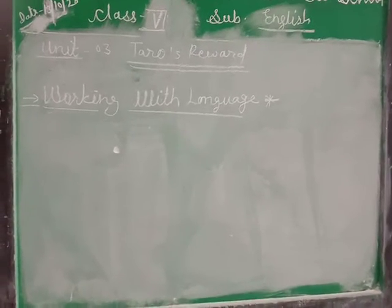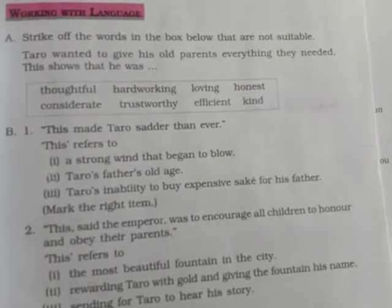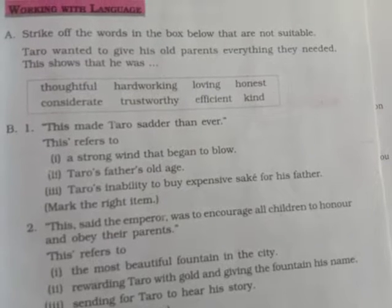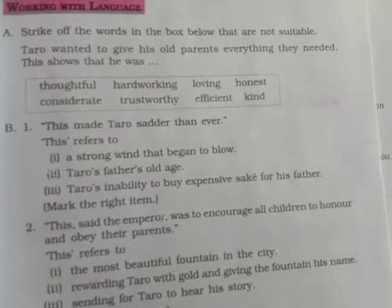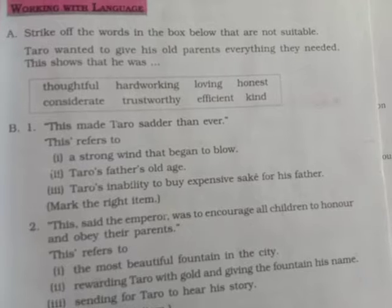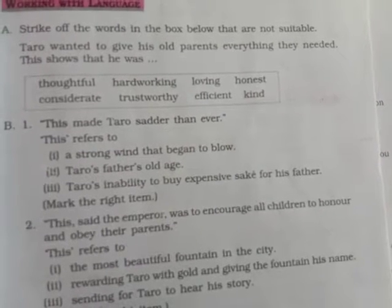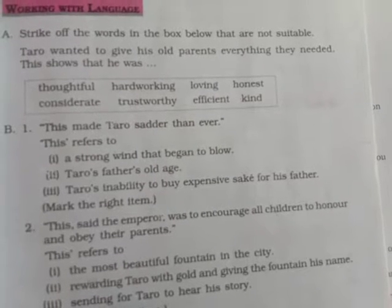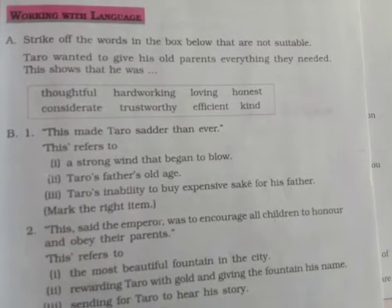Question number eight: Working with Language. Strike out the words in the box below that are not suitable. 'Taro wanted to give his old parents everything they needed. This shows that he was...' Some words are given: thoughtful, hard-working, loving, honest, concentrate, trustworthy, efficient, and kind.